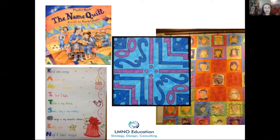Here are some art integration activities. There's a great book called 'The Name Quilt' for elementary and English language learners — it's about a quilt that has ancestors' names. Learning about the origin of your last name can also be a great gift to give a student. You can use acrostic poetry, artwork using their names, and quilt making that shows names and things they like.